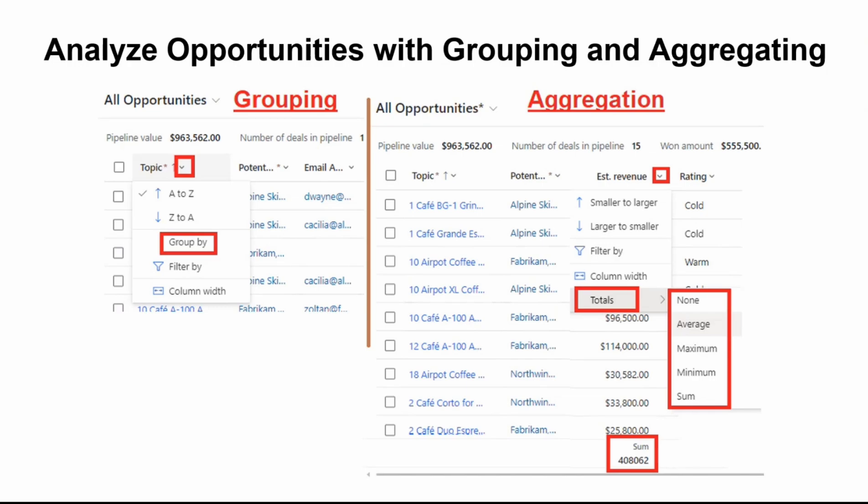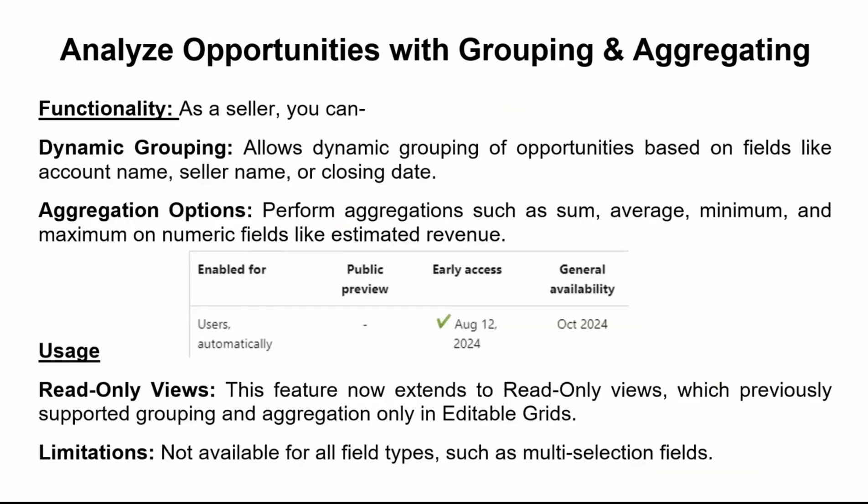So as a seller, you can group opportunities by account name, seller name, closing date, or any other relevant field. And you can aggregate the numeric values. These two are the main features.